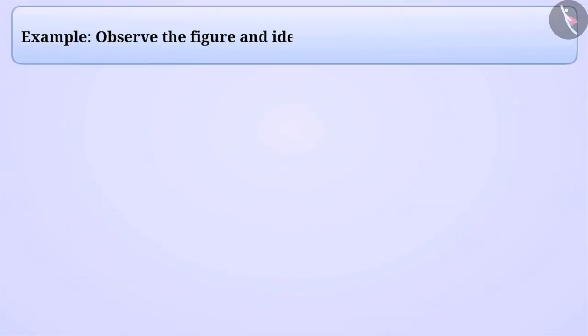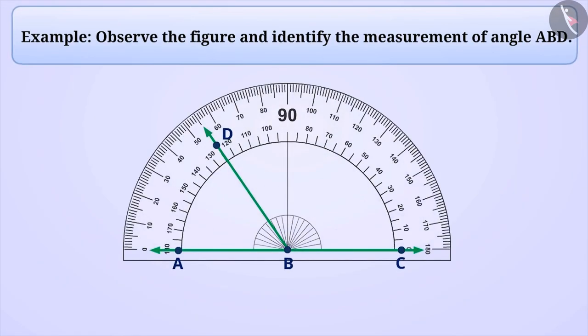Next example. Observe the following figure and identify the measurement of angle ABD. If we observe the angle ABD, we will know that point B is the vertex of this angle and AB and BD are the sides of this angle.